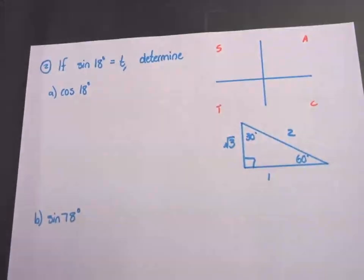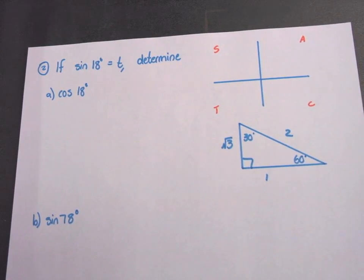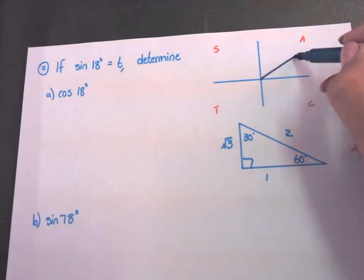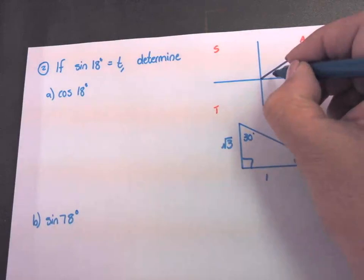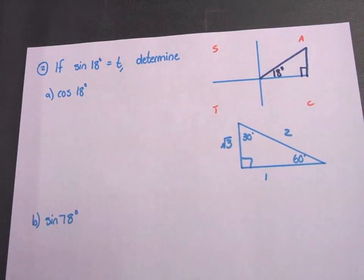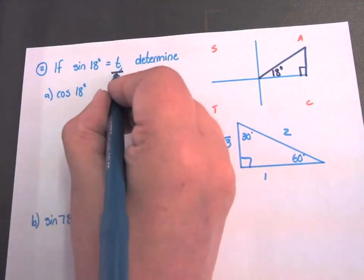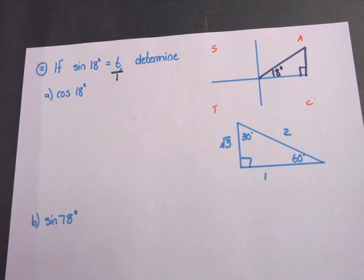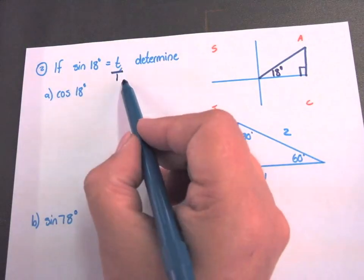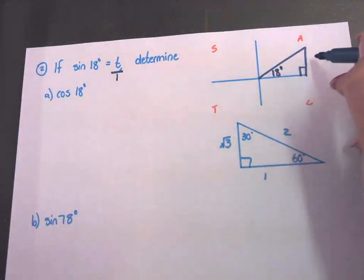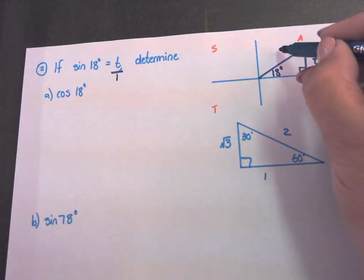Number 2. Sign 18 degrees is T. Now you have to determine where the 18 degrees lie. It's still in the first quadrant. So I draw my triangle there with my 18 degrees. The T I have to write as a fraction, so it's T over 1. And sign is opposite over hypotenuse. So opposite 18 degrees is T and the hypotenuse is 1.